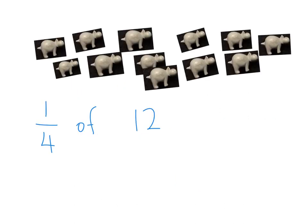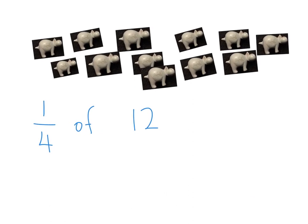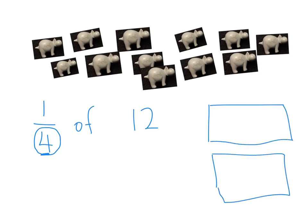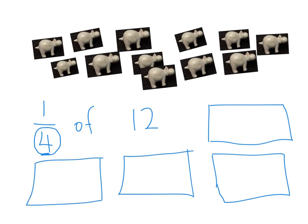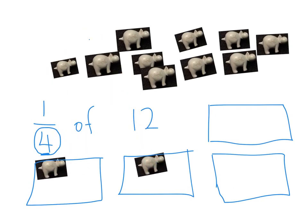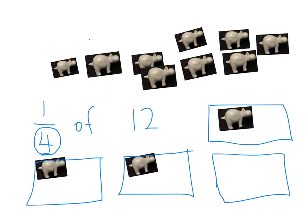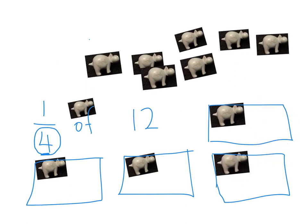Here I am trying to find a quarter of twelve. I've got my twelve hippos up the top here. Because I'm trying to find a quarter, I need to be aware that the denominator tells me how many groups I'm going to separate my twelve hippos into. So I'm going to quickly draw my four boxes — it's always nice to have a little boundary to pop them into. Then I'm simply going to pop them into those four groups, which will help me find the quarter easily.